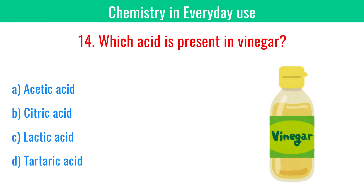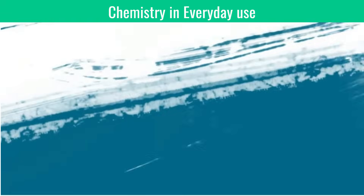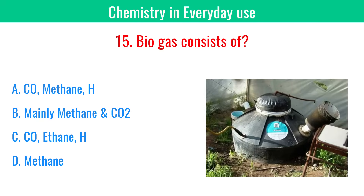Which acid is present in vinegar? Acetic acid. Biogas consists mainly of methane and carbon dioxide.